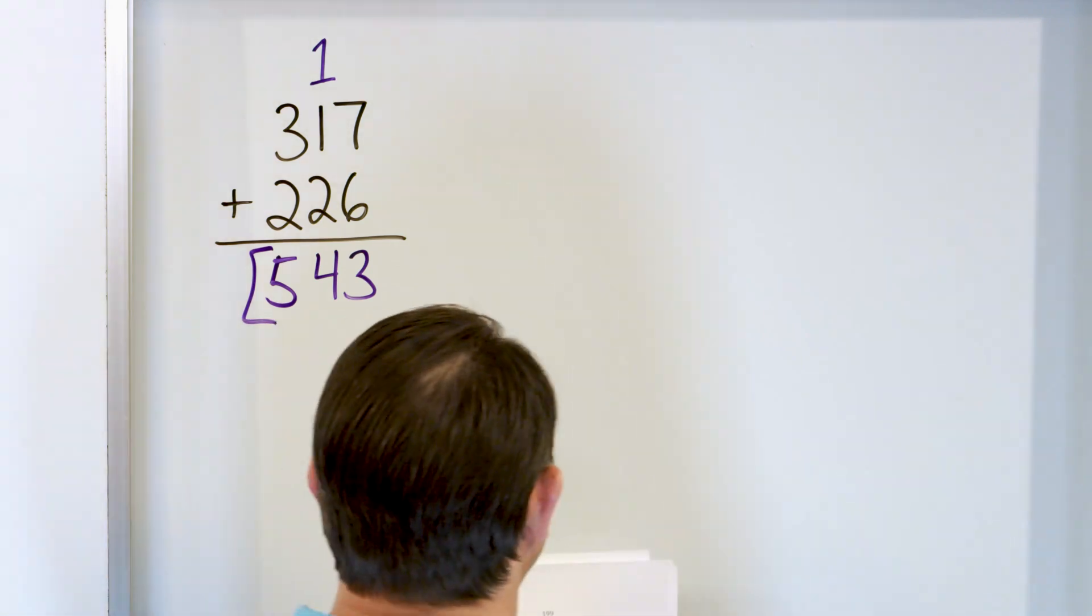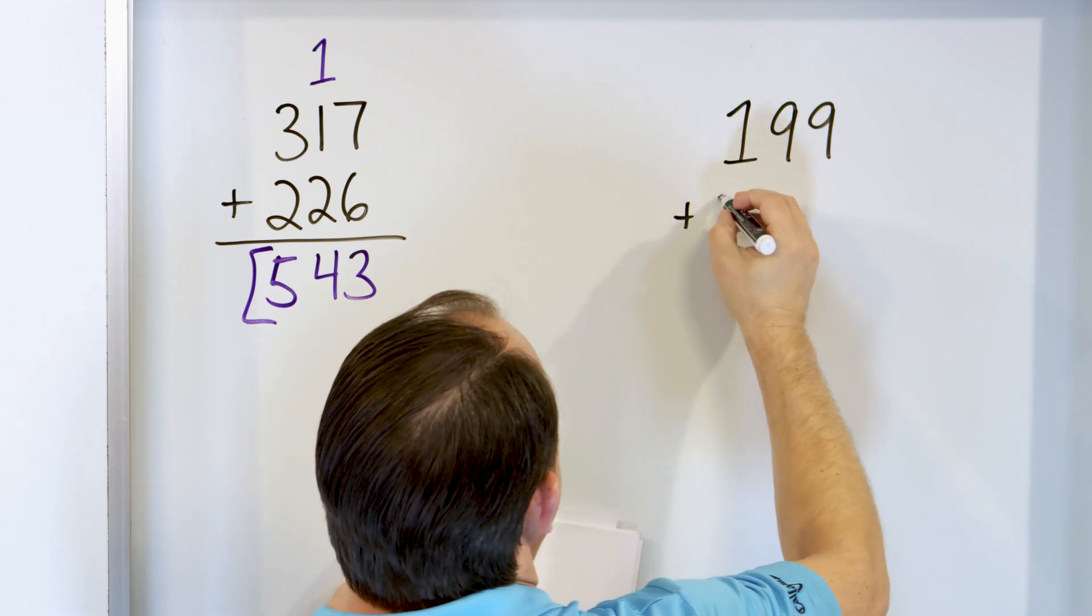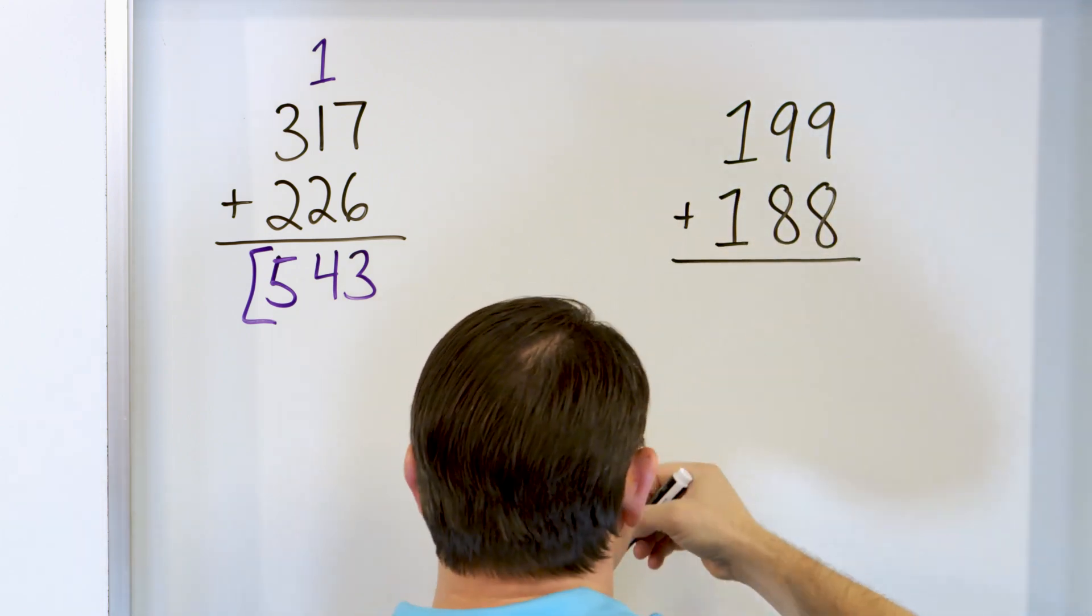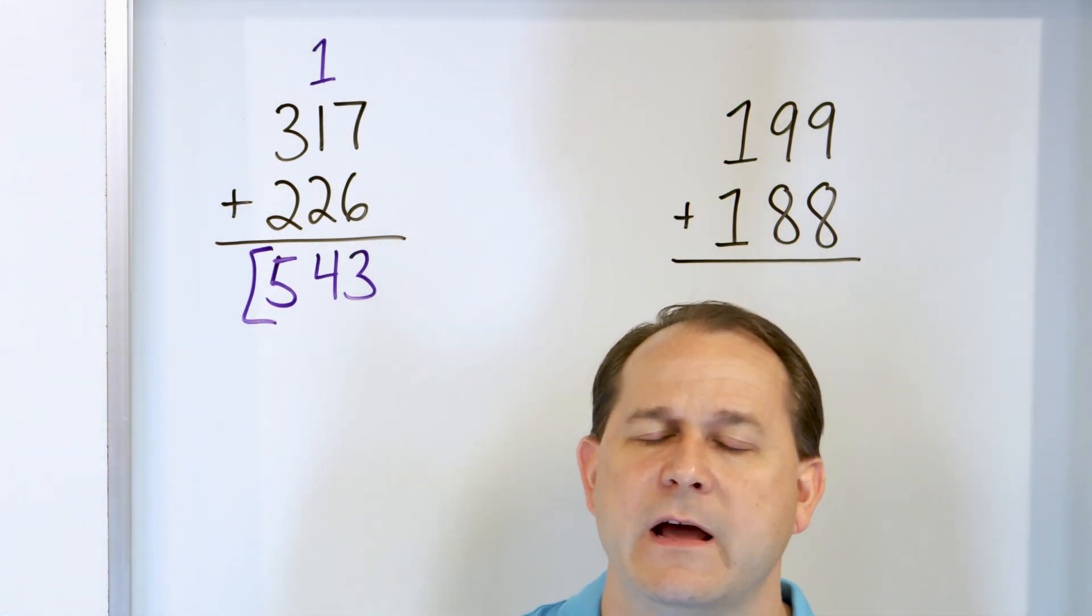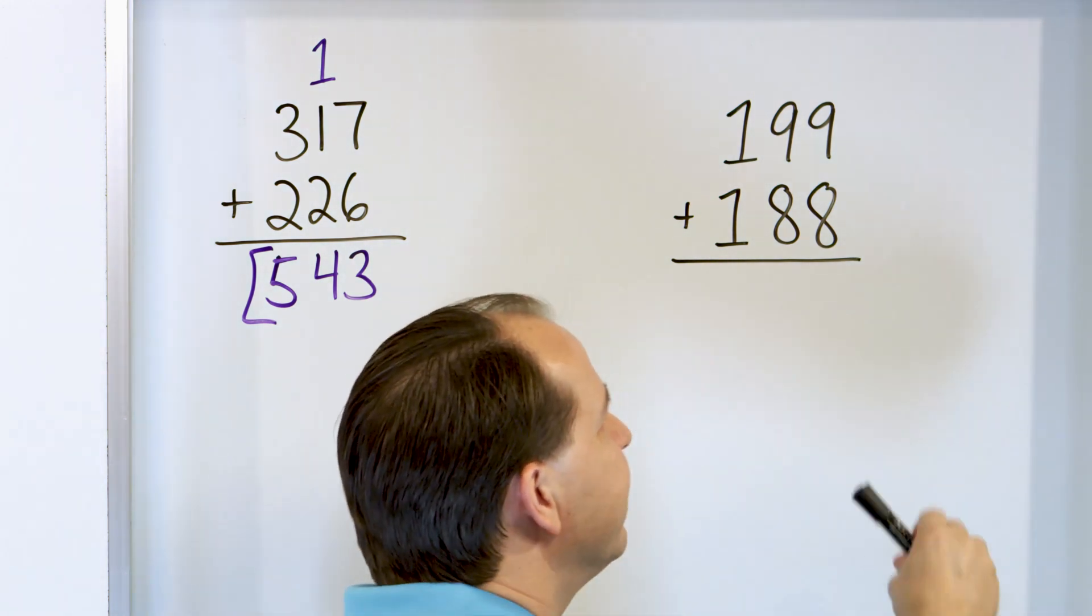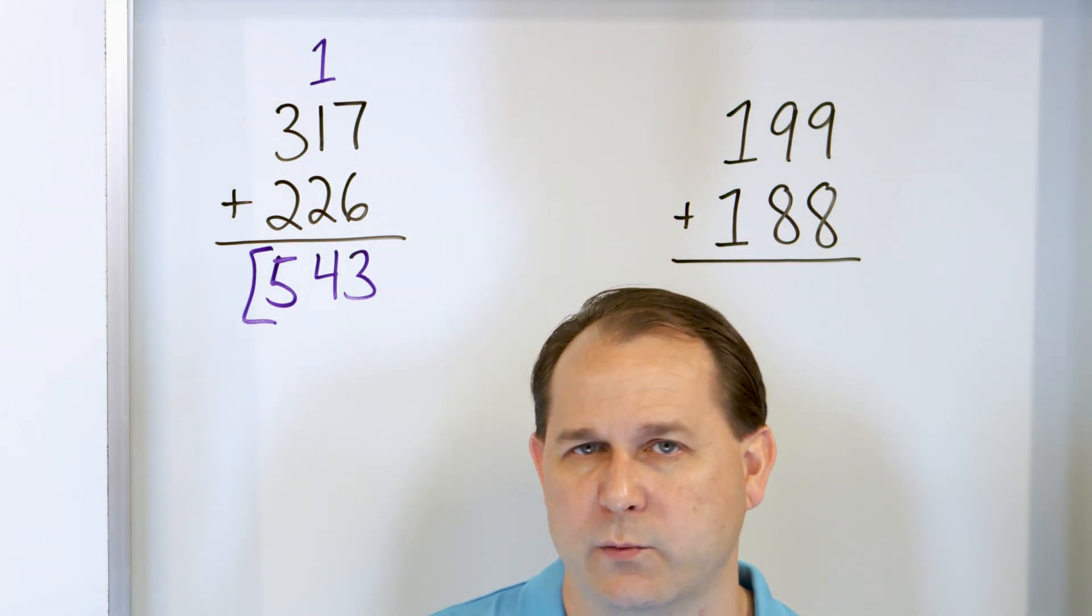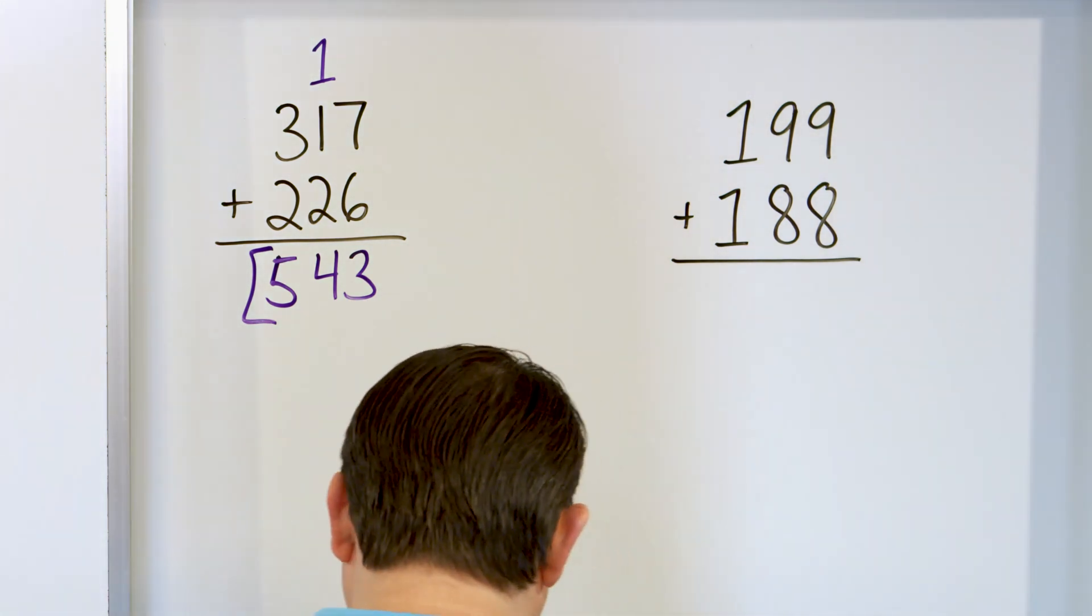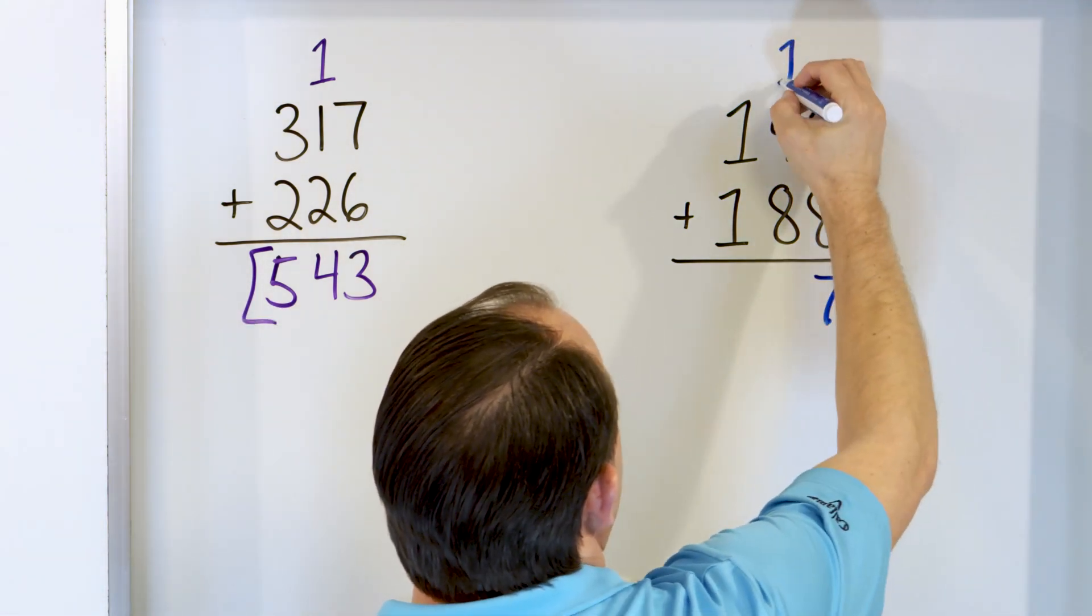Next problem. Let's say we have 199, and we'll add to that 188. Now this is not a complement, but 9 plus 8, you should know it fast. 9 plus anything is actually easy. 9 plus 8 is 17. How do I know that? Because if it were 10 plus 8, it would have to be 18. And I know those really well. 10 plus 8 is 18. But it's not 10 plus 8, it's 9 plus 8. So it has to be 17. So let's put a 17 here. 7, carry the 1.